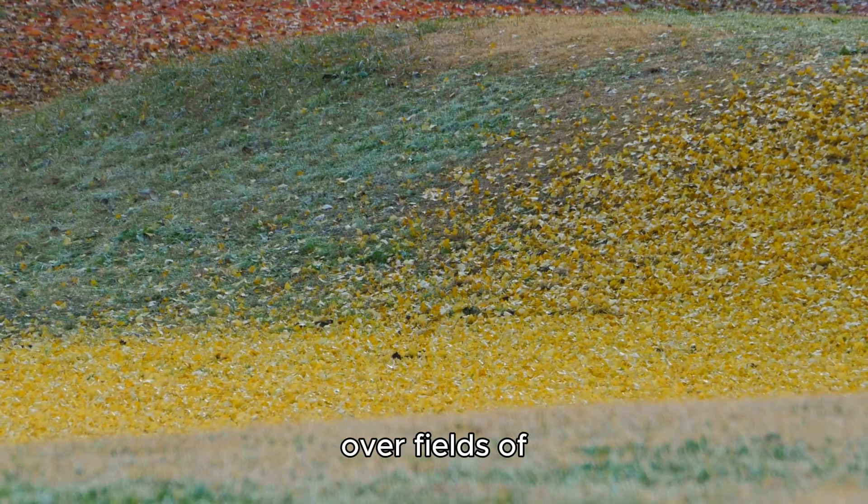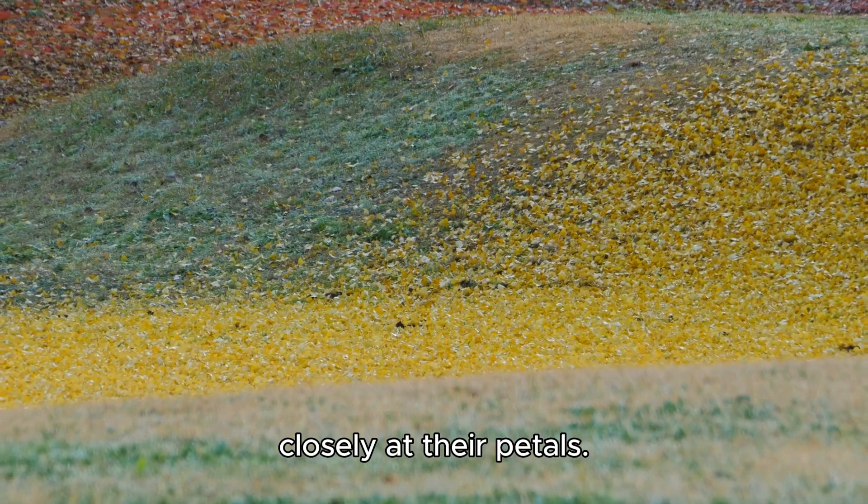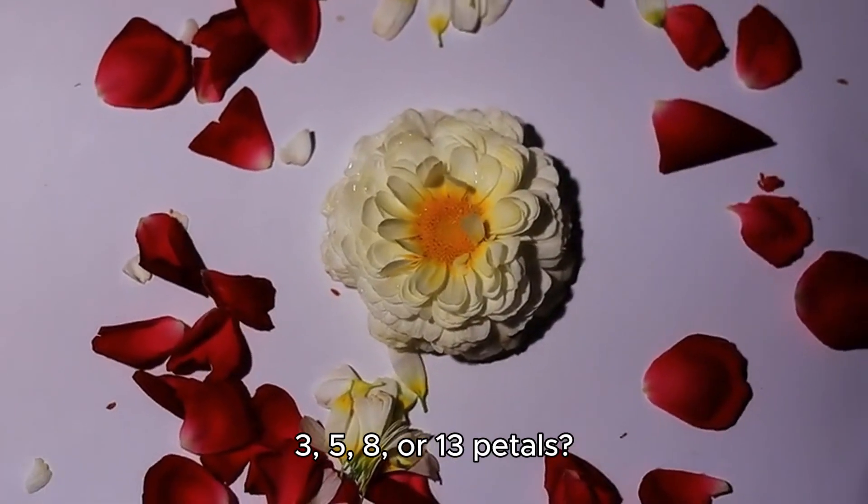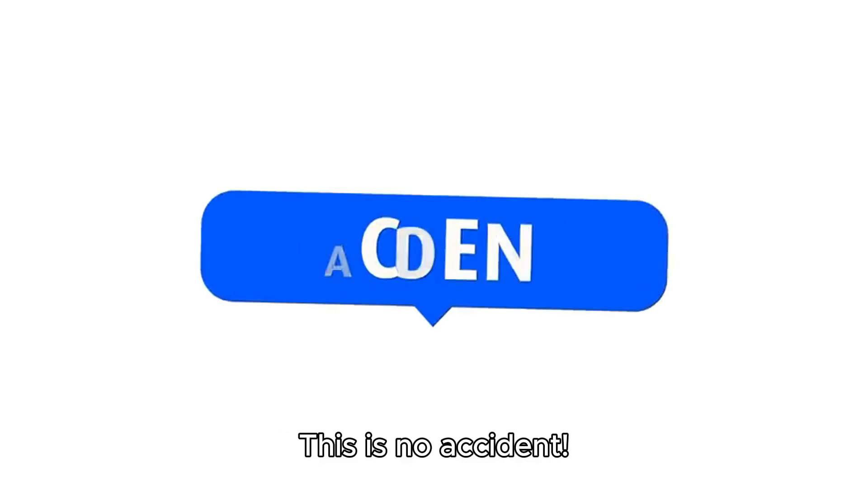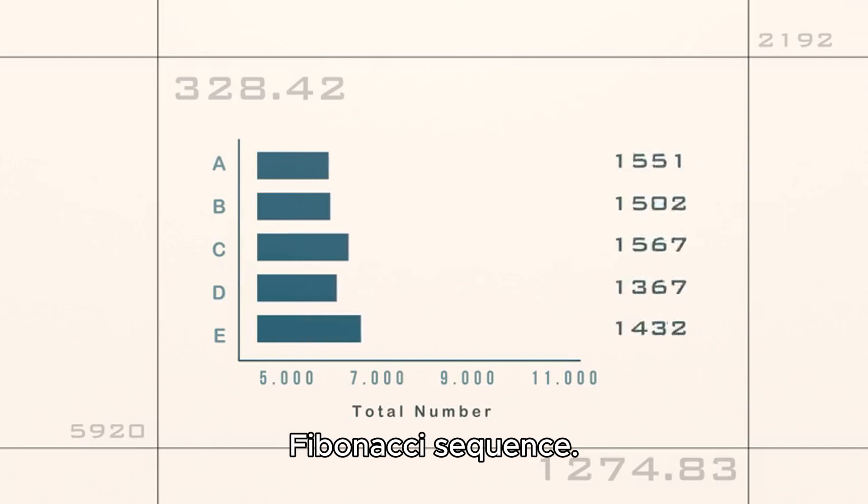Numbers in nature. Now, as we glide over fields of flowers, look closely at their petals. Have you ever noticed that flowers often have 3, 5, 8, or 13 petals? This is no accident. These numbers come from a pattern called the Fibonacci sequence.